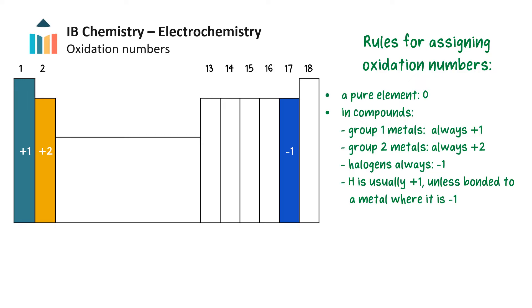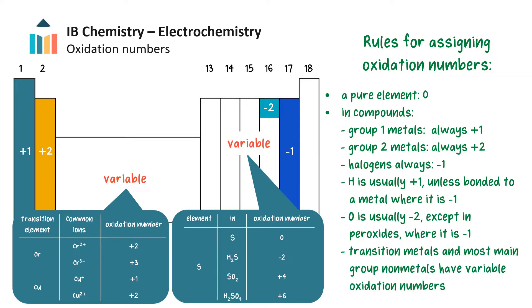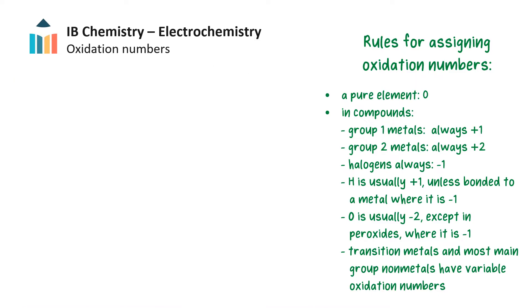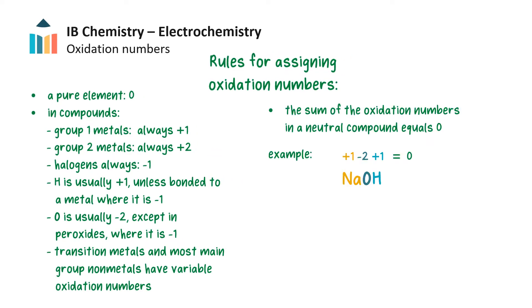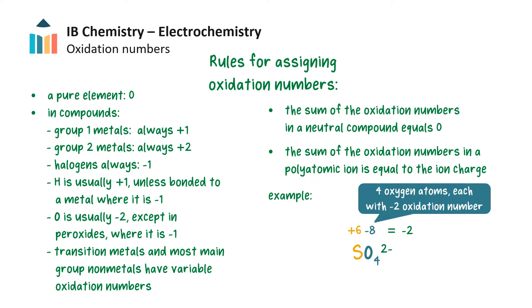Hydrogen at the top of group 1 is usually +1, unless bonded to a metal where it is −1. Oxygen is usually −2, except in peroxides where it is −1. Transition metals and most main group non-metals have variable oxidation numbers depending on the compound they are in. The sum of the oxidation numbers in a neutral compound is always equal to zero. The sum of the oxidation numbers in a polyatomic ion equals the charge on the ion. Note that since there are four oxygen atoms in this example, each with an oxidation number of −2, together they contribute a total of −8.